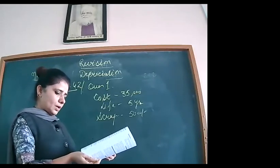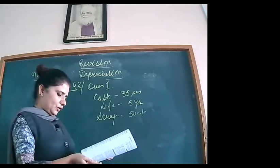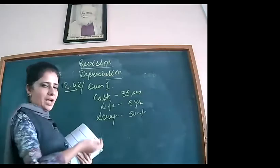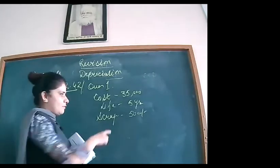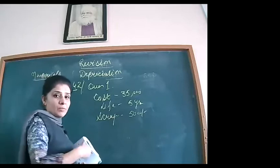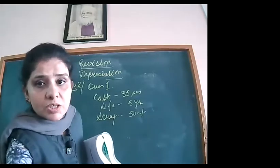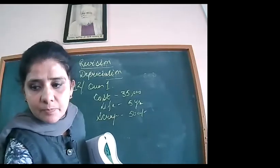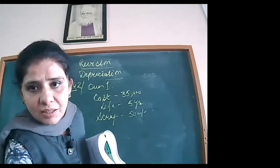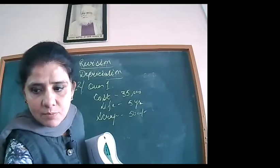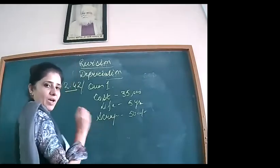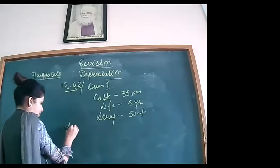What is asked? Prepare the machinery account for the first three years using the straight-line method. When the life of the asset, cost, and scrap value are given but the percentage of depreciation is not given, you must apply the formula for annual depreciation.